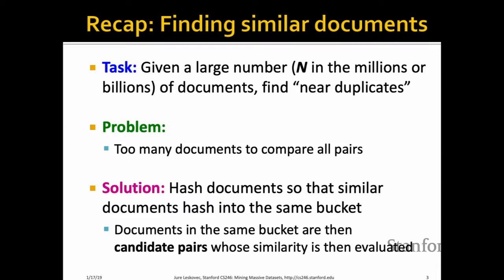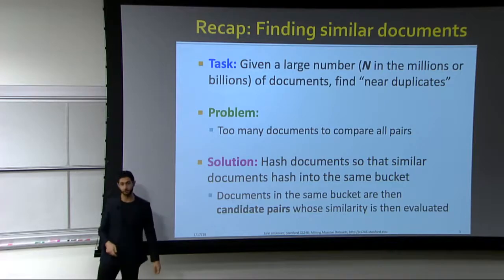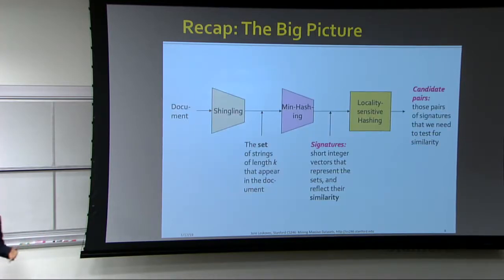The solution is to hash documents so that similar documents end up in the same bucket. Hashing is a fast, linear operation we can perform on each single document. Once hashing is performed, we identify candidate pairs and perform the expensive similarity comparisons only on those pairs. That's how we bring down the computational cost of running similarity on such a large data set.